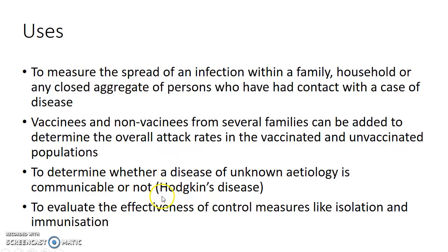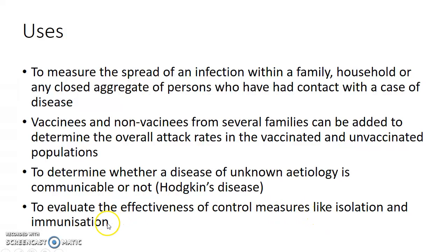Secondary attack rate can be used to determine whether a disease of unknown etiology is communicable or not. For example, it can be used to determine whether Hodgkin's disease is communicable or not. Secondary attack rate can also be used to evaluate the effectiveness of control measures like isolation and immunization.